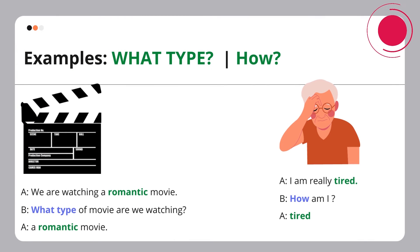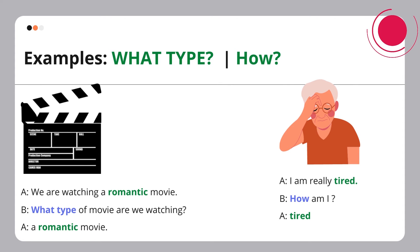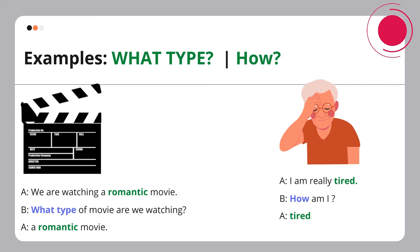Examples — What type? How? A: We are watching a romantic movie. B: What type of movie are we watching? A: A romantic movie. A: I am really tired. B: How am I? A: Tired.